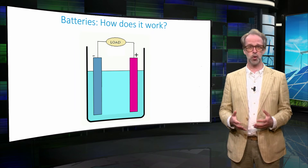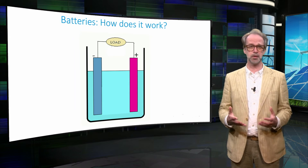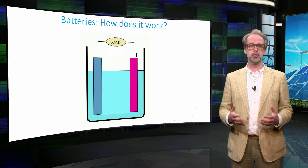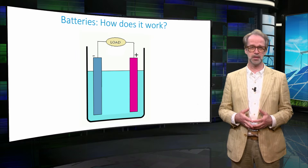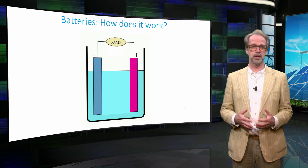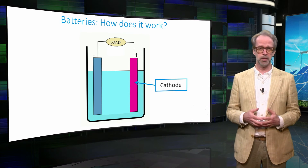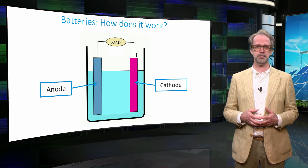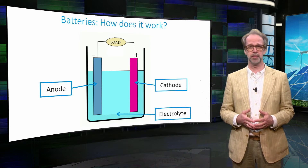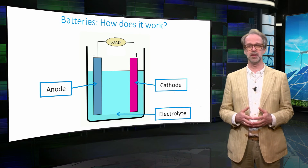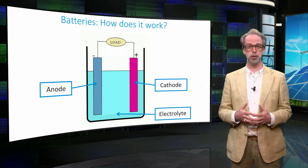A battery is a bit more complicated than a capacitor because it also involves electrochemical reactions. Electrical charge changes the chemical nature of the electrodes. Inside a battery there are two electrodes — a positive one called the cathode and a negative one called the anode. They are separated by a solid or liquid electrolyte, which is a substance that allows the diffusion of ions but is impermeable to electrons.